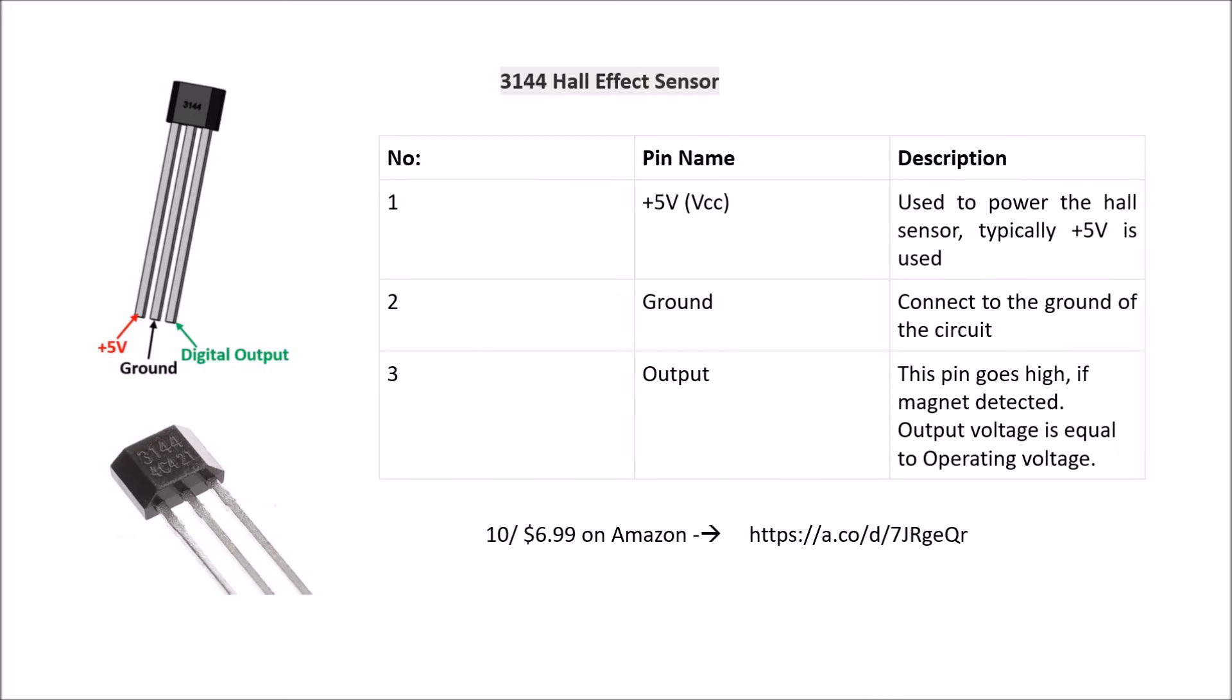So what does this look like? The 3144 has got only three pins. It looks like a transistor. It has a 5-volt pin, a ground, and a digital output.